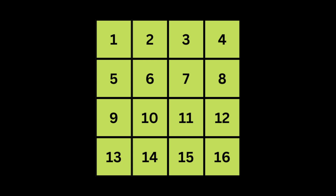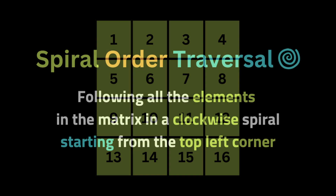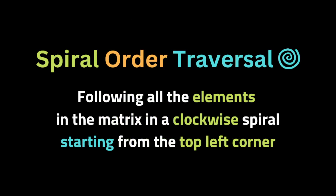Imagine that you have a matrix — a grid of numbers — and they ask us to visit all the numbers inside the matrix in a special order. The order should be right, down, left, up. To solve this problem we're going to use a technique called spiral order traversal.